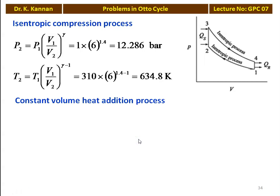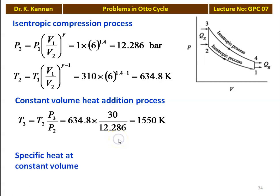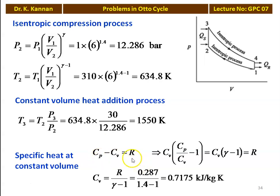For the isentropic compression process: P2 = P1·(V1/V2)^γ = 1×6^1.4 = 12.286 bar. T2 = T1·(V1/V2)^(γ−1) = 310×6^0.4 = 634.8 K. For constant volume heat addition with maximum pressure P3 = 30 bar: T3 = T2·(P3/P2) = 634.8×(30/12.286) = 1550 K. Specific heat Cv = R/(γ−1) = 0.287/0.4 = 0.7175 kJ/kg·K.